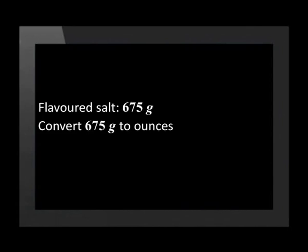Once again, it is not practical to buy 6,67 pounds of beef fillet. We will have to buy 7 pounds from the butcher. We can apply the same technique to the next ingredient. The recipe calls for 675 grams of flavored salt. Convert 675 grams to ounces if 1 gram equals 0,0353 ounces.